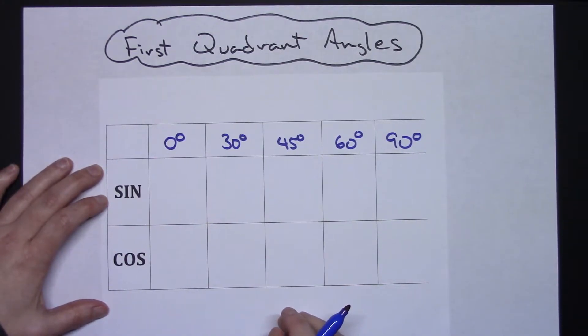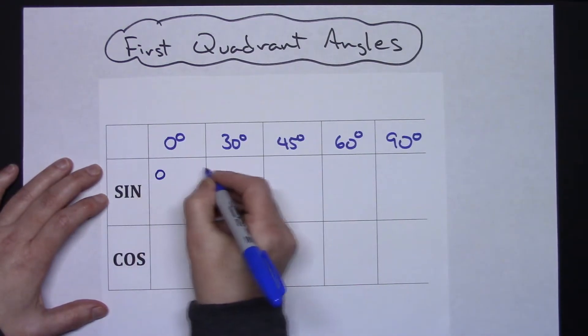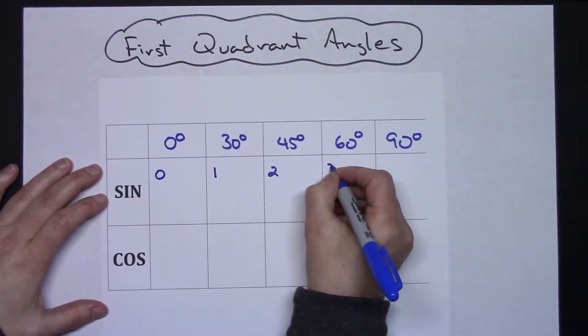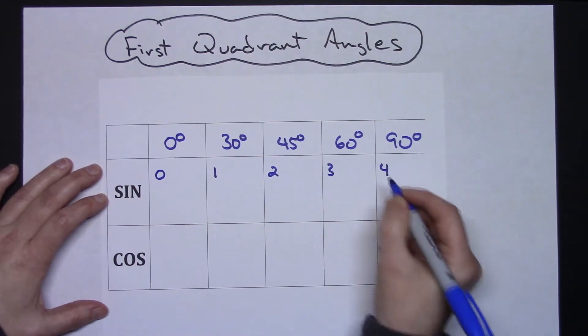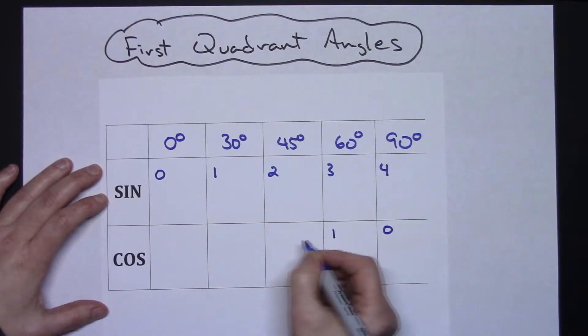Now first thing you're going to do is you're just going to count like normal starting with zero. So I'm going to go zero, one, two, three, four, and then I'm going to do the same thing coming back this way: zero, one, two, three, four. So the first thing is nothing more than counting.